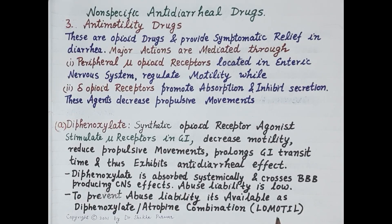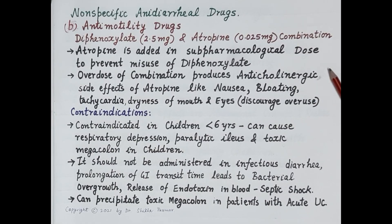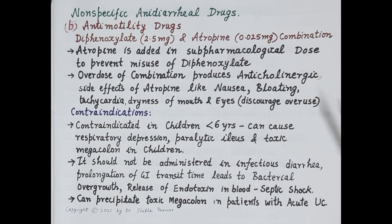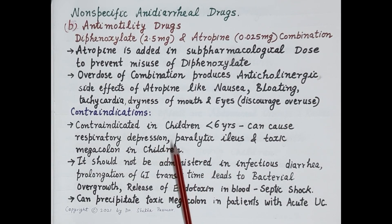To further prevent abuse liability, diphenoxylate is available as a diphenoxylate-atropine combination known as Lomotil. Atropine is added in sub-pharmacological doses to prevent abuse or misuse. Overdose of the combination produces anticholinergic side effects of atropine — such as nausea, bloating, tachycardia, and dryness of mouth and eyes — which discourage misuse.